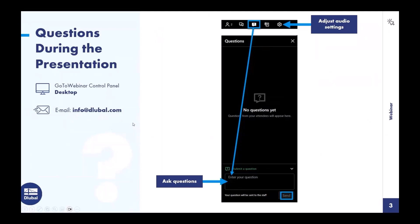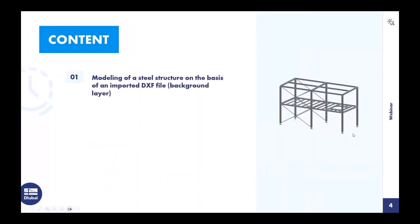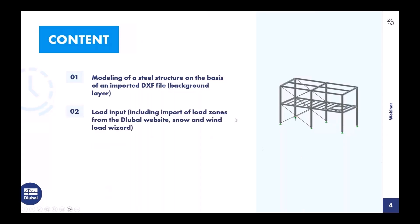You can also watch the entire webinar and then email your questions to info at Luba.com and you will get an answer. The agenda today: first, I will model the steel structure. Before I do that, I will import a DXF file as a background layer. Then the modeling starts, followed by the load input — using snow and wind load results and the GeoZone tool from the website. The last topic today is the application of imperfections. Now we switch to the program, APM6.